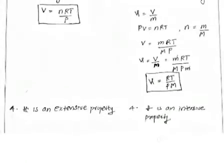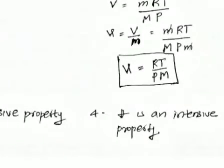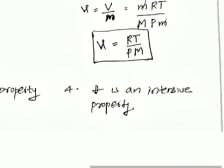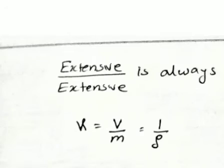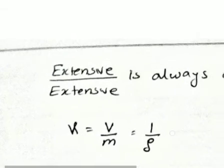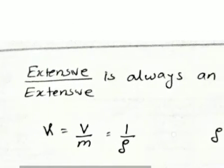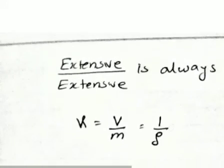The fourth difference: volume is an extensive property, but specific volume is an intensive property. Why does specific volume become an intensive property? Because specific volume equals volume divided by mass. Volume is an extensive property and mass is also an extensive property, and extensive property divided by extensive property is always an intensive property.